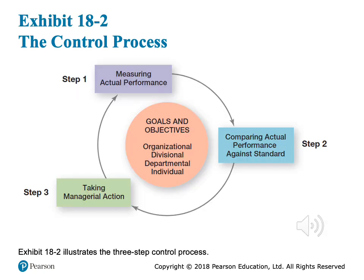In this figure, we can see that in order to achieve goals and objectives — whether at the organizational, divisional, departmental, or individual level — we have to go through the three steps: first measuring the actual performance, then comparing actual performance against the standard, and step three taking managerial action. We put a plan, make sure people are working according to it through the control process, in order to achieve the goals and objectives at any level in the organization.